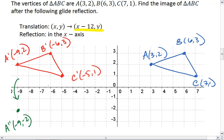B is at negative 6, 3. So B double prime is at negative 6, negative 3. Because the reflection in the x-axis takes everything, x, y, and maps it to x, negative y.